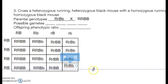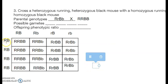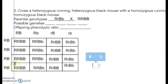Notice that when one parent is homozygous, all gametes match up in that column, so the whole column is the same. We get big R big R big B big B and big R big R big B little b columns all the way down, and big R little r big B little b down the other side.